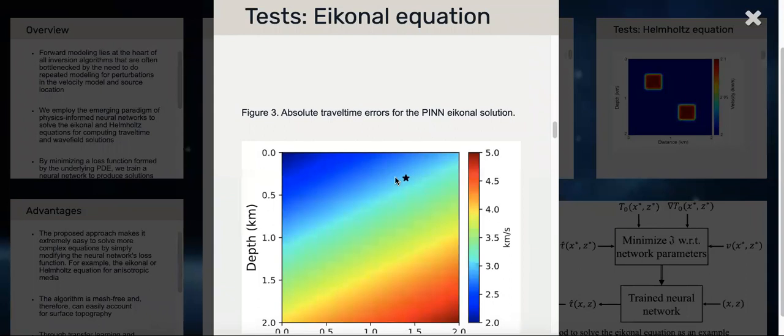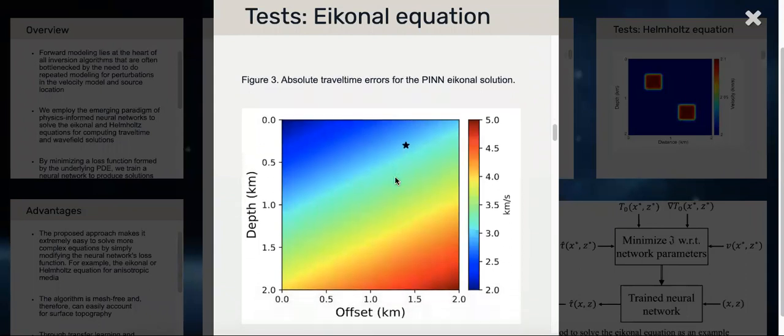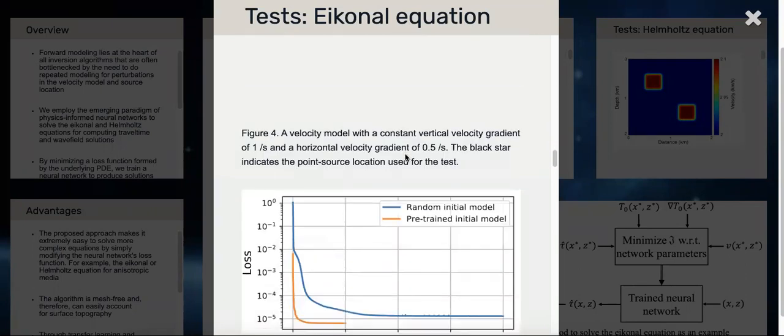Now what can we do? Now we change the velocity model and source location. We introduce a horizontal gradient here compared to the previous case and change the source location. Now we ask the question: can we start with the model we trained previously, the neural network model? Instead of training from scratch, can we use transfer learning? That is exactly what we do here.